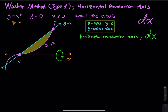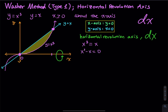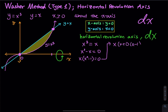First, let's find the lower limit and the upper limit. Looking at the graph, the lower limit goes from x equals zero to the intersection point. To prove it, we set x to the third equal to x. Moving x to the other side gives x cubed minus x equals zero. Factoring out x, we get x times x squared minus one equals zero, so x times x plus one times x minus one equals zero. That gives x equals zero, x equals one, and x equals negative one.